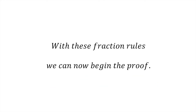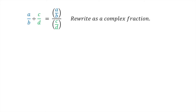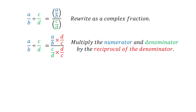With these fraction rules we can now begin the proof. We first begin by writing the division of the fractions as a complex fraction — that is, a fraction where the numerator and denominator are both fractions. We now multiply the numerator and the denominator by the reciprocal of the denominator. That is, we multiply A divided by B by D divided by C, and we multiply C divided by D also by D divided by C.